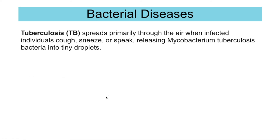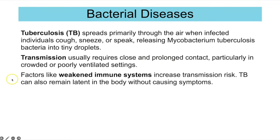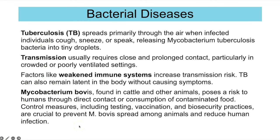Tuberculosis spreads mainly through the air when infected individuals cough, sneeze or speak, releasing Mycobacterium tuberculosis bacteria in tiny droplets. Transmission usually requires close and prolonged contact, particularly in crowded or poorly ventilated settings. Factors like having a weakened immune system increase your risk of developing symptoms and transmitting the disease. TB can also remain latent in the body without causing symptoms.